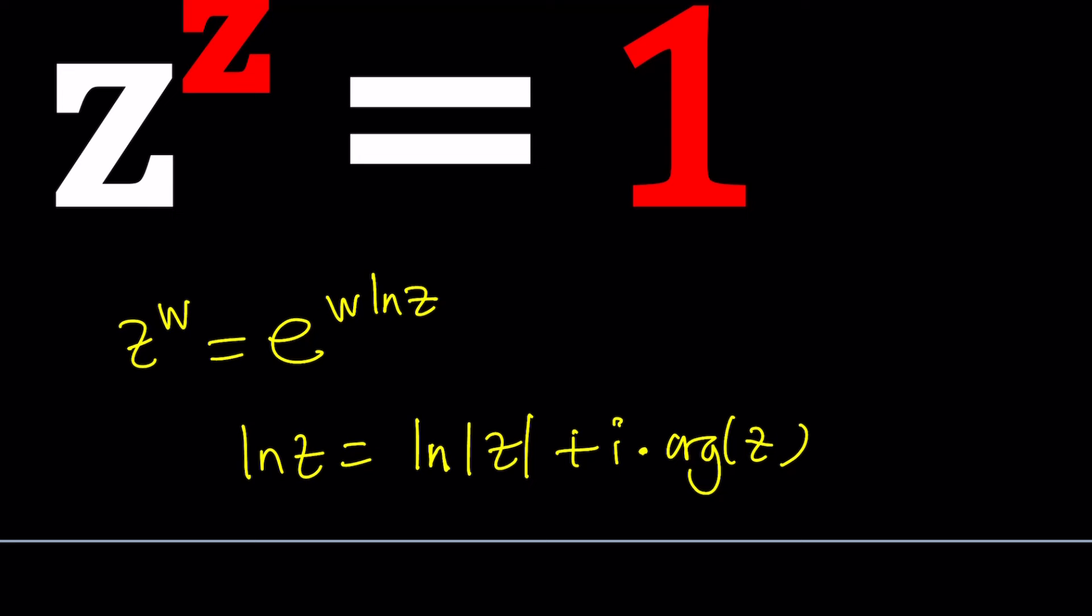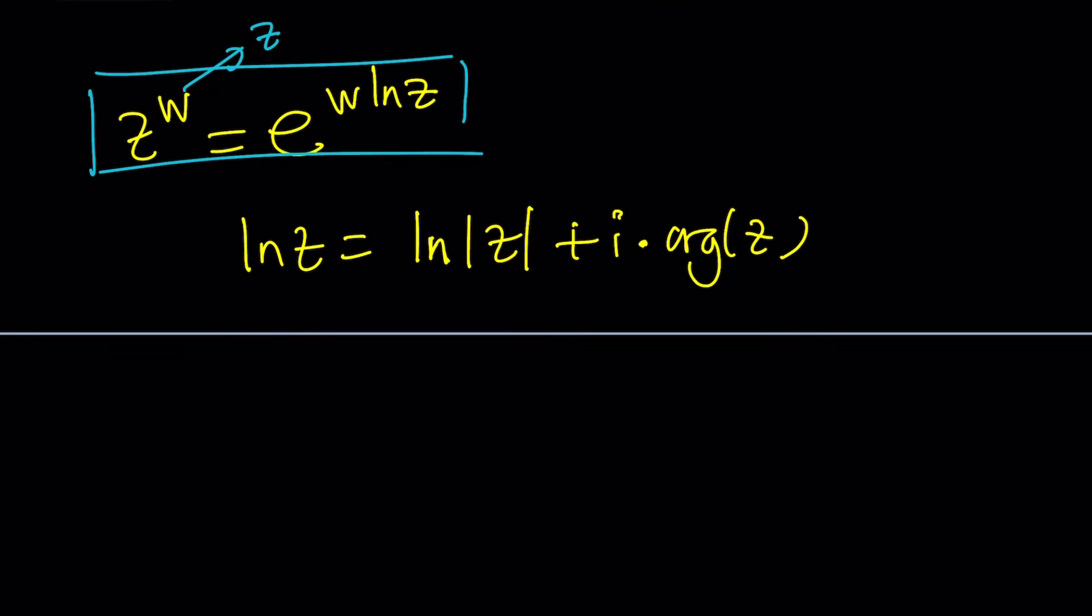I'm going to avoid all those complexities and just jump into this problem. So let's use this identity for W equals Z which means the base and the exponent are going to be the same. So Z to the power Z can be written as e to the power Z ln Z. Anytime you see e to the Z ln Z you can also replace it with Z to the power Z.